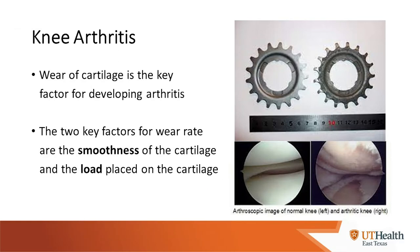Arthritis is driven by cartilage wear, and there are two key factors: how smooth the surface is and what load is on that surface. If you had an acute cartilage injury — a chunk knocked off the femur — that abnormal surface rubbing against a normal tibia will wear it over time. This creates a vicious circle of increasingly irregular surfaces, which is why arthritis never gets better on radiographs — it only progresses because areas of wear always increase.